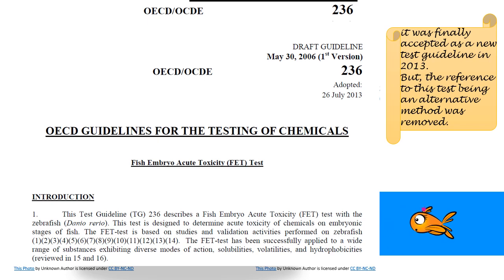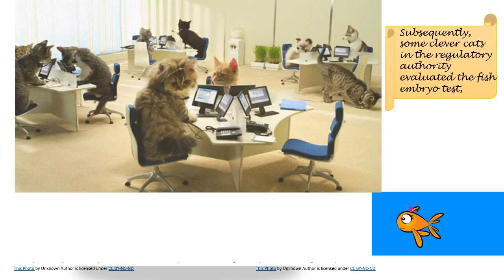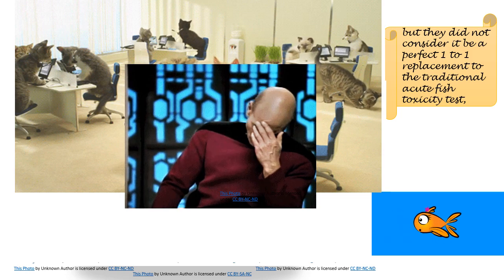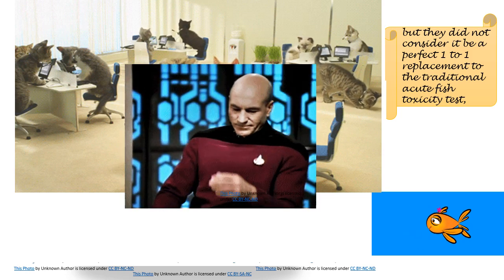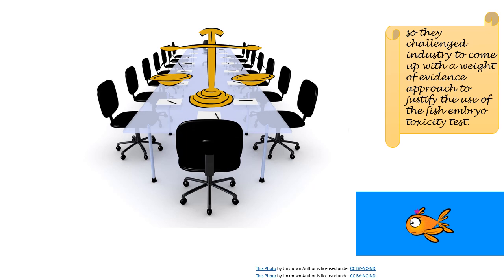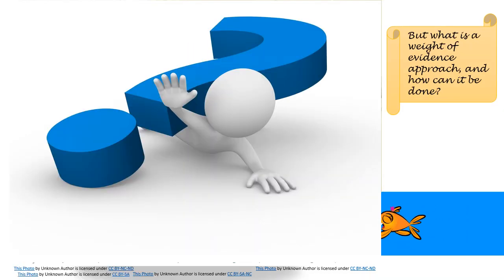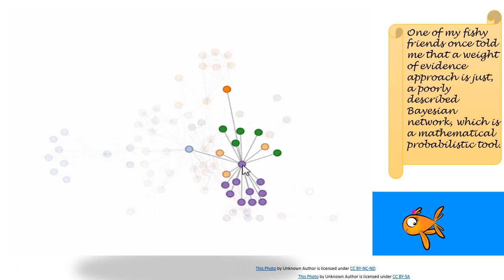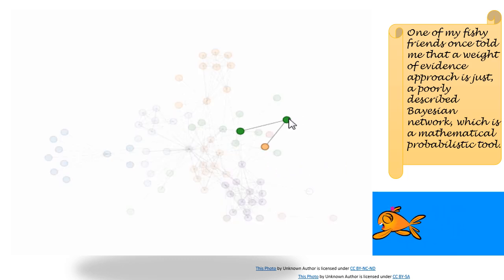The reference to this test being an alternative method was removed. Subsequently, some clever people in the regulatory authority evaluated the fish embryo test, but did not consider it to be a perfect one-to-one replacement to the traditional acute fish toxicity test. So they challenged industry to come up with a weight of evidence approach to justify the use of the fish embryo toxicity test. But what is a weight of evidence approach, and how can it be done?